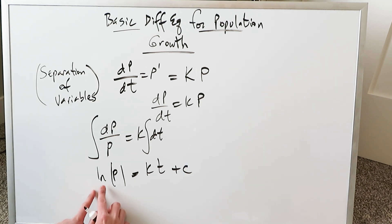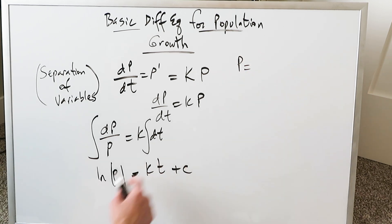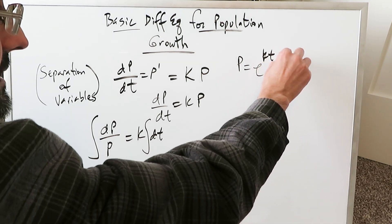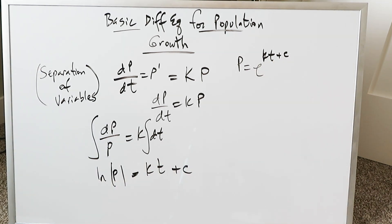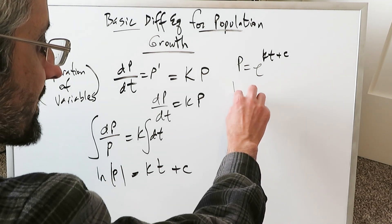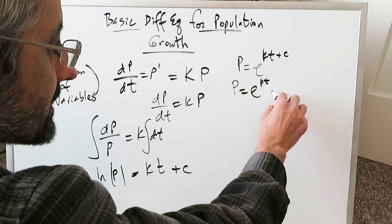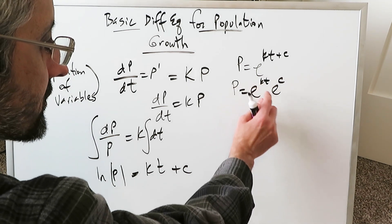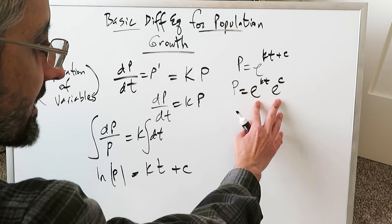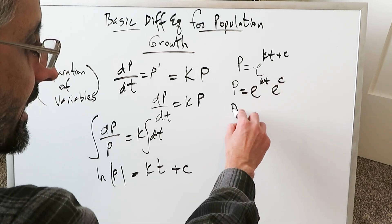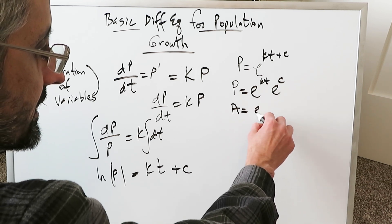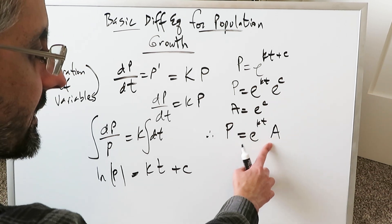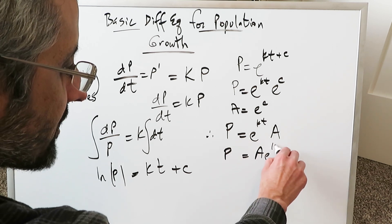Now we have to actually solve for p. Eliminating the absolute value, p equals e to the power of kt + c. By properties of exponents, this is the same as e^(kt) times e^c. We do a substitution: let A equal e^c. Therefore, p equals A·e^(kt). Rearranging for clarity: p equals A·e^(kt).